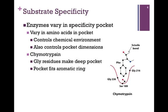How can this work? Well, enzymes can vary in the specificity pocket, at least in the case of these three enzymes. In other words, they vary in the amino acids that form that pocket. It controls the chemical environment as well as the dimensions of that pocket — that is, the amino acid residues that comprise that pocket.